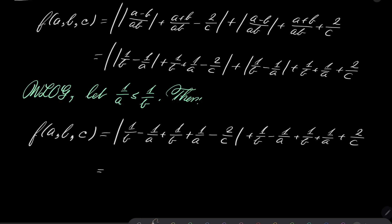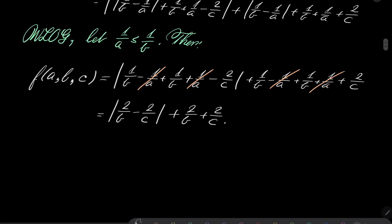The 1/a terms cancel, so we have |2/b - 2/c| + |2/b + 2/c|. Now we notice the symmetry once again and consider two cases.